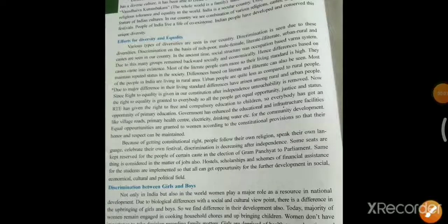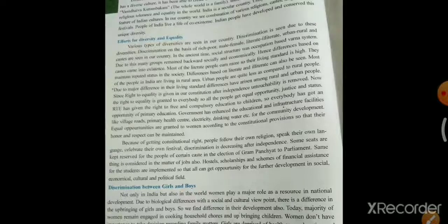Good morning students, welcome to Social Science. Today we are going to discuss Chapter 14, Part 3. Open your book, page number 92 — 'Efforts for Diversity and Equality.' Our country has a lot of diversity; it has its benefits, but sometimes it also creates problems. So our government has made certain rules, and we will discuss what efforts are made for equality in this diversity.